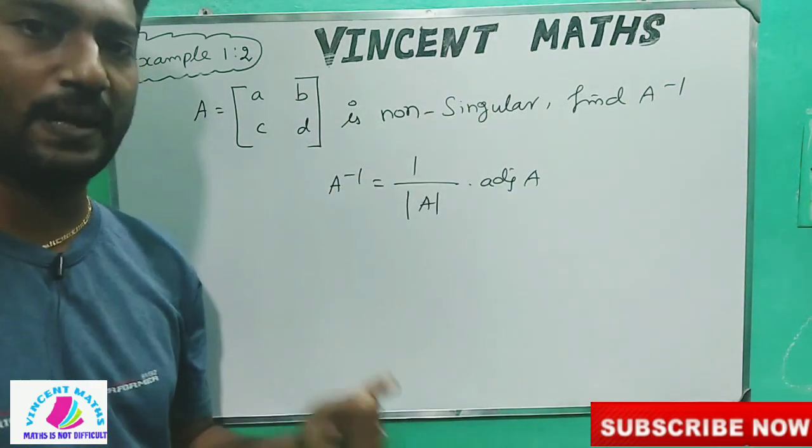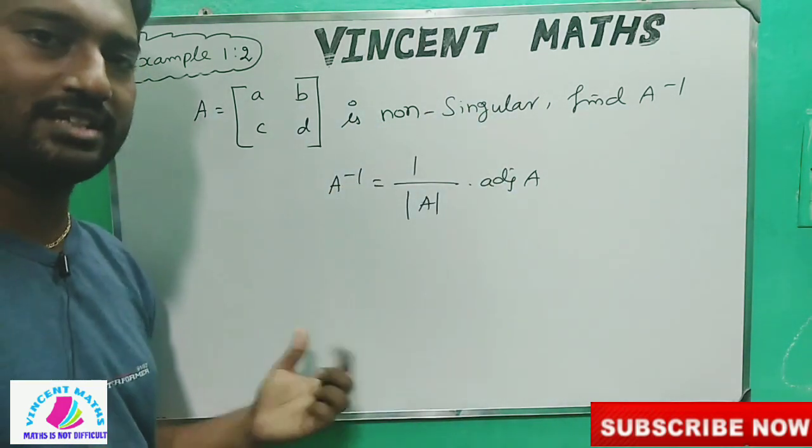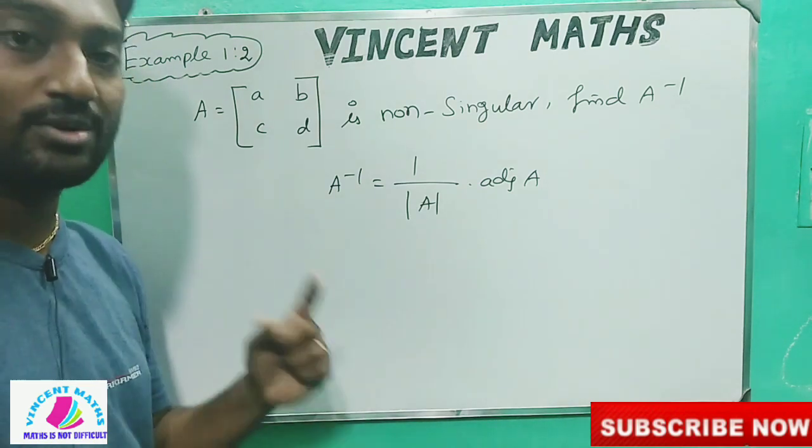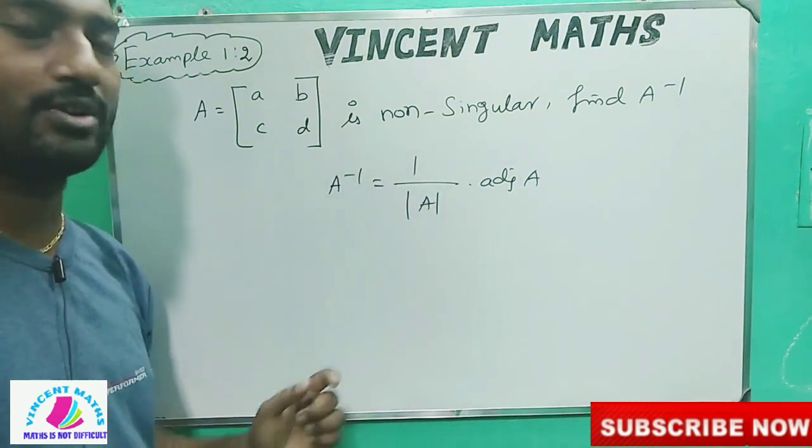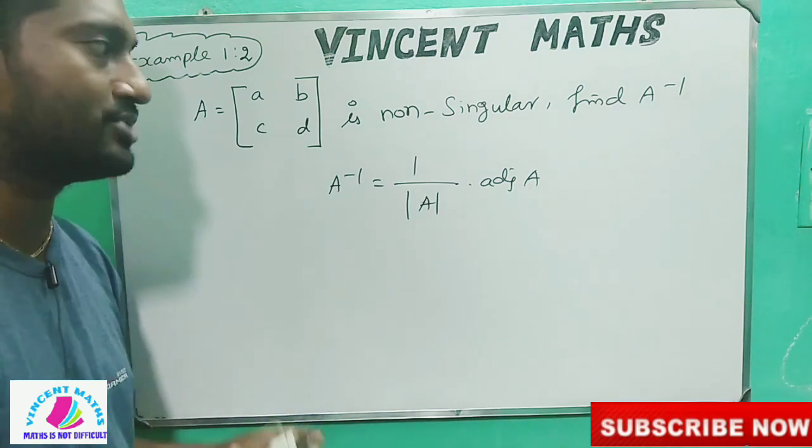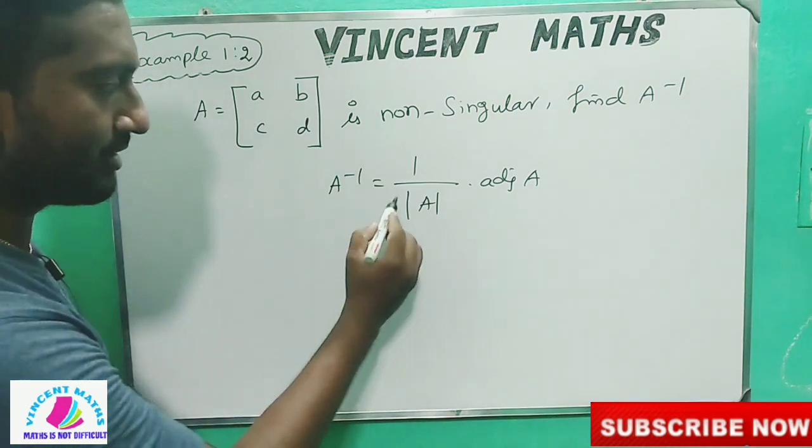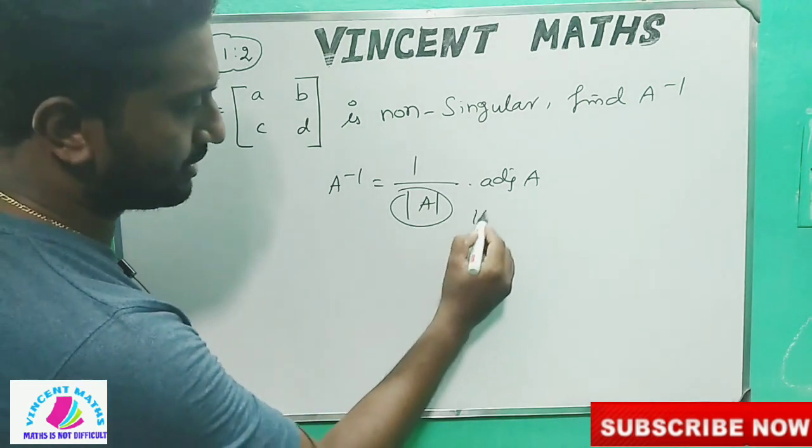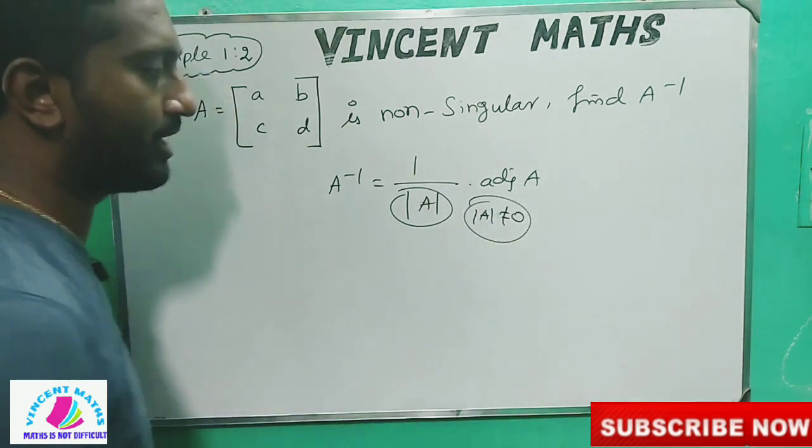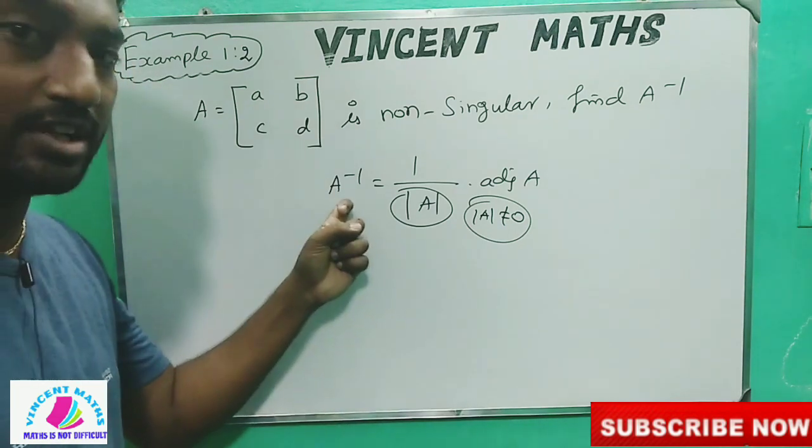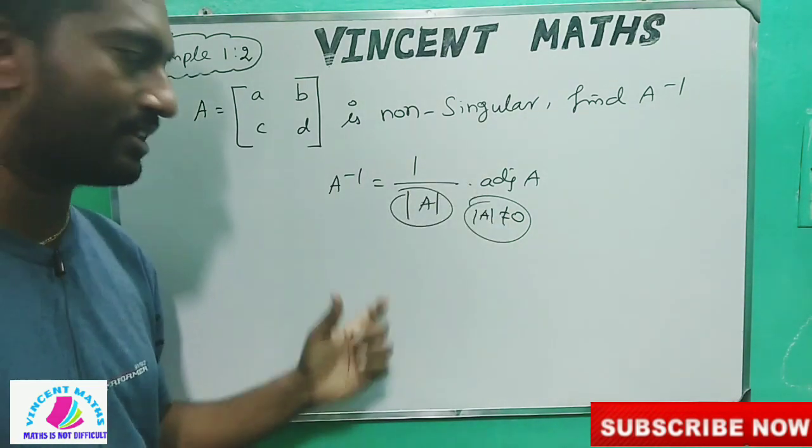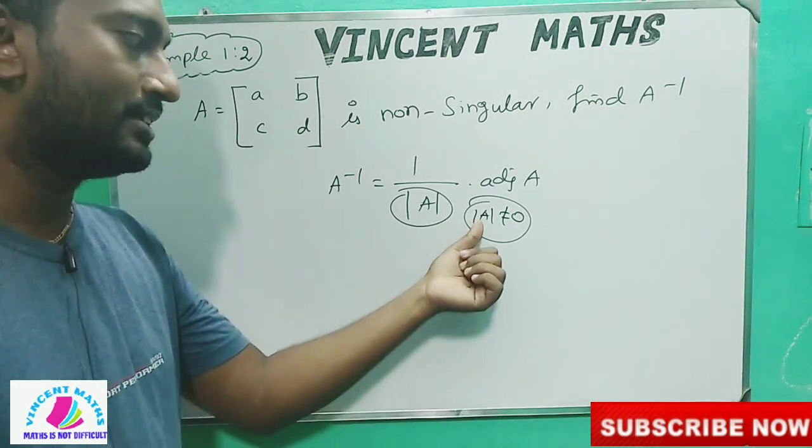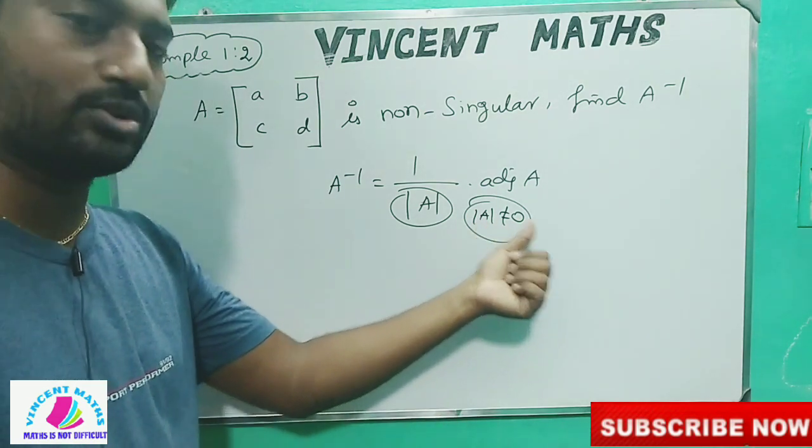What do we know about non-singular? We learned last year - singular or non-singular. If we find determinant is zero, it's singular. For non-singular, determinant of A is not equal to zero. If determinant of A is not equal to zero, we can find A inverse.